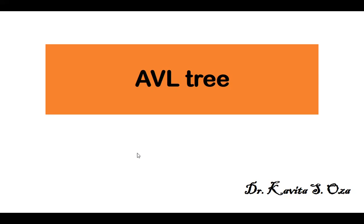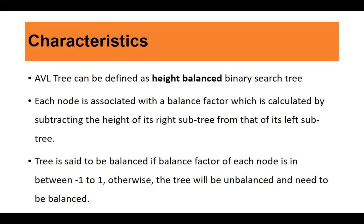As we talk about AVL tree as a data structure, we'll have two things: characteristics and the set of operations which can be carried out on this data structure. An AVL tree can be defined as a height balanced binary search tree. Each node is associated with a balance factor, which is calculated by subtracting the height of its right subtree from that of its left subtree. The tree is set to be balanced if the balance factor of each node is between minus one and one — that is, minus one, zero, and one are the valid balance factors. Otherwise the tree is unbalanced and needs to be balanced.